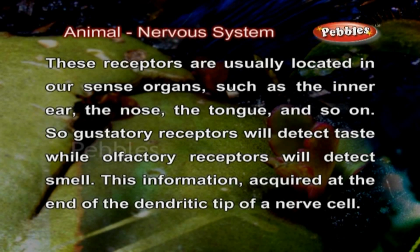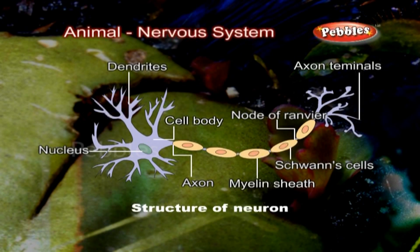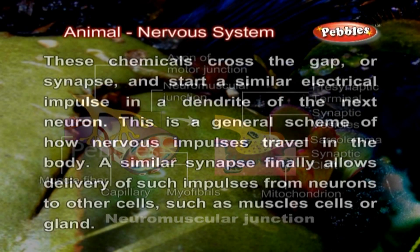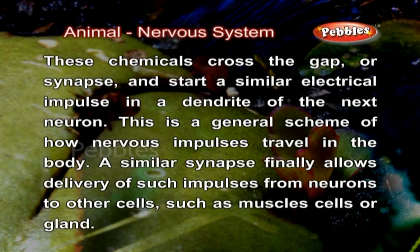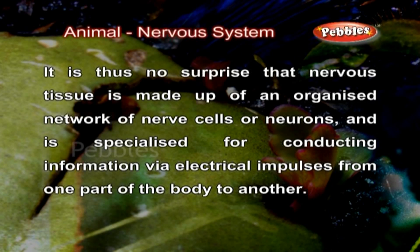Gustatory receptors will detect taste while olfactory receptors will detect smell. This information is acquired at the end of the dendritic tip of a nerve cell. These chemicals cross the gap or synapse and start a similar electrical impulse in a dendrite of the next neuron. This is a general scheme of how nervous impulses travel in the body. A similar synapse finally allows delivery of such impulses from neurons to other cells such as muscle cells or glands. Nervous tissue is made up of an organized network of nerve cells or neurons and is specialized for conducting information via electrical impulses from one part of the body to another.